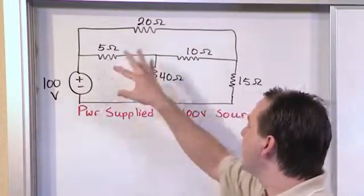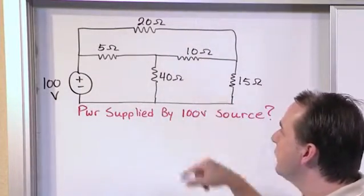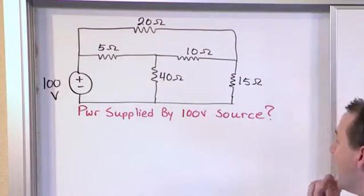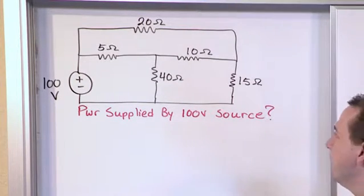So we have a 100 volt source, we have a resistor network, very similar to other problems we've done in the past, and we're again building our complexity up in terms of our problems.